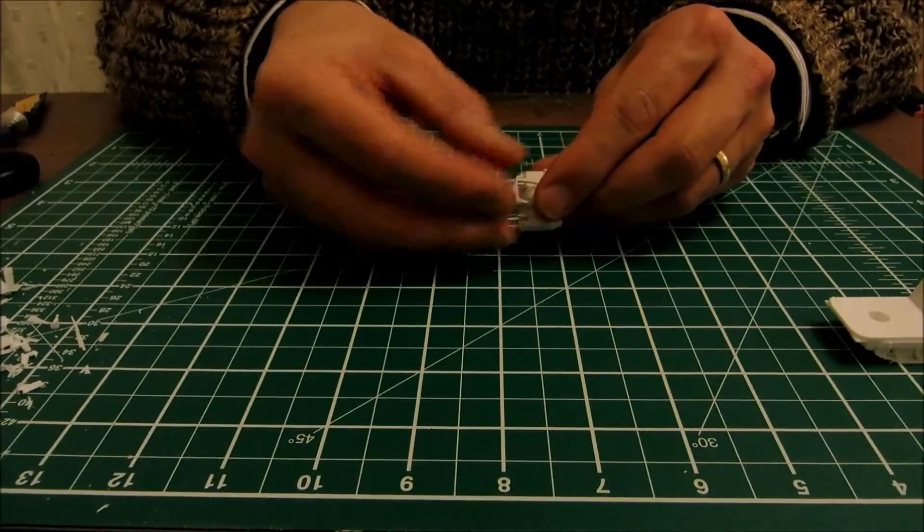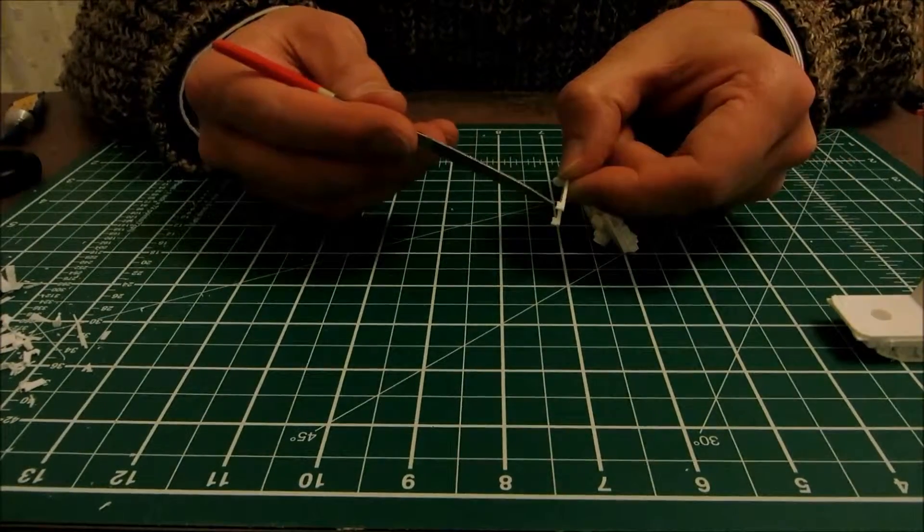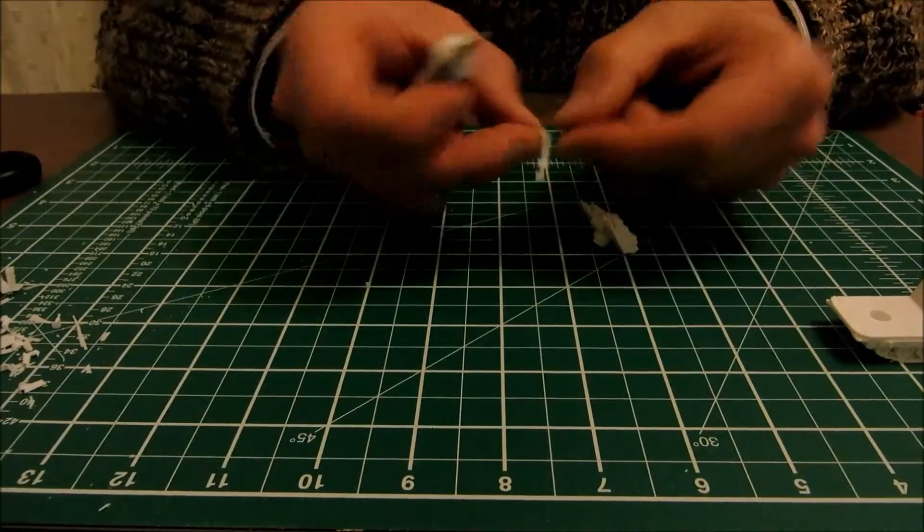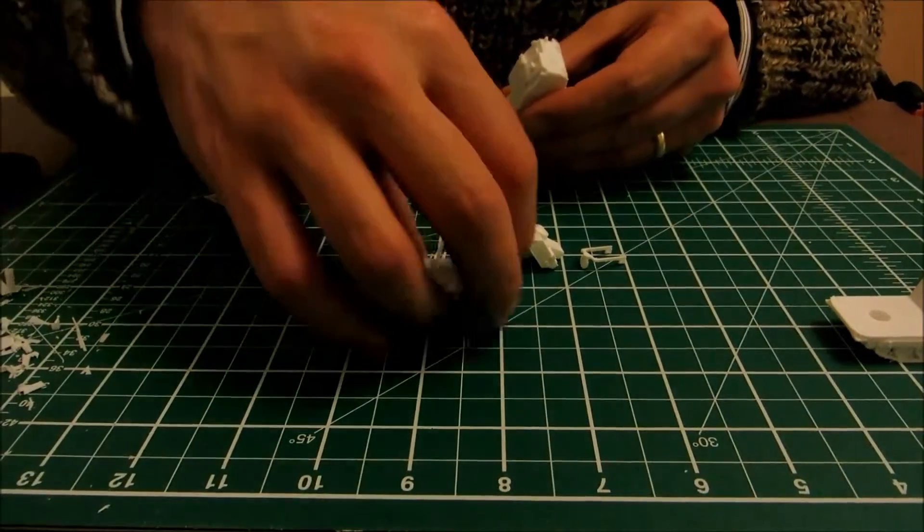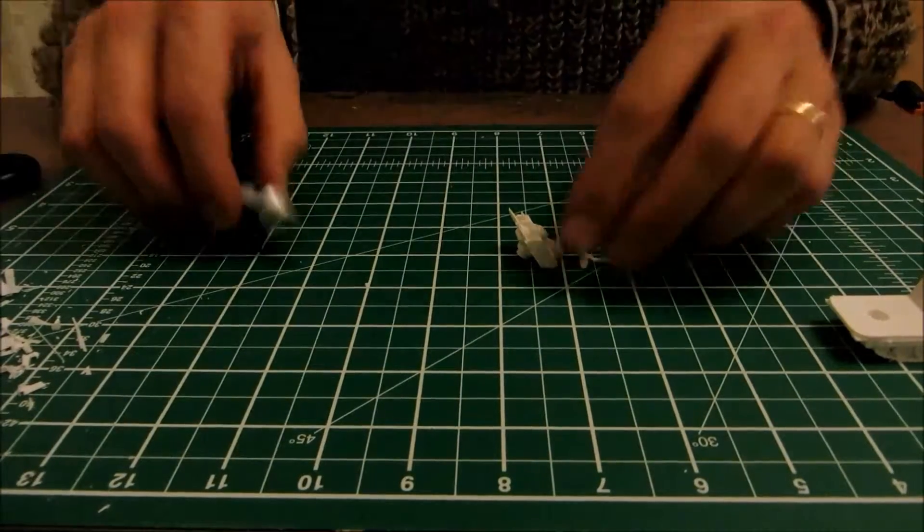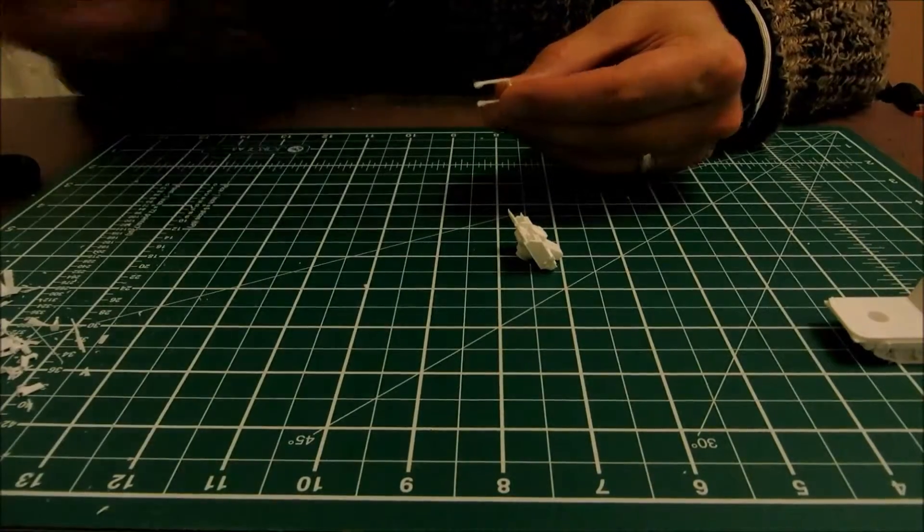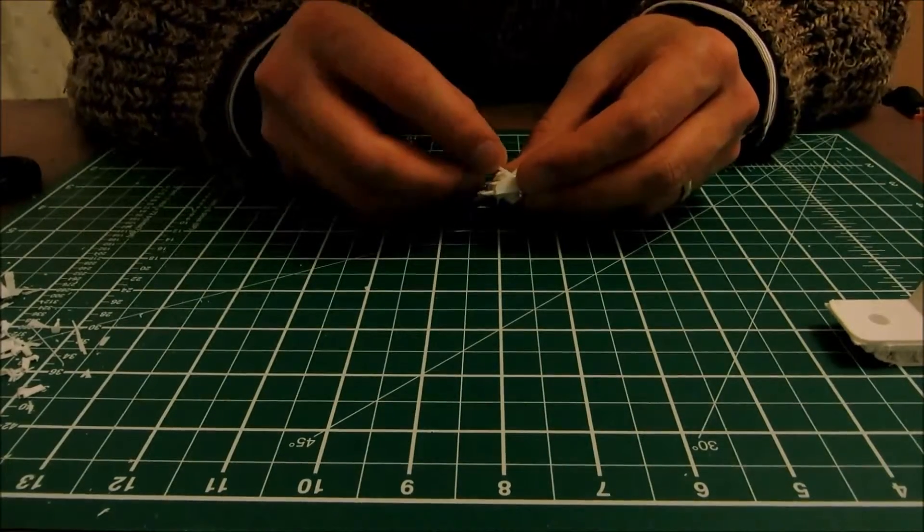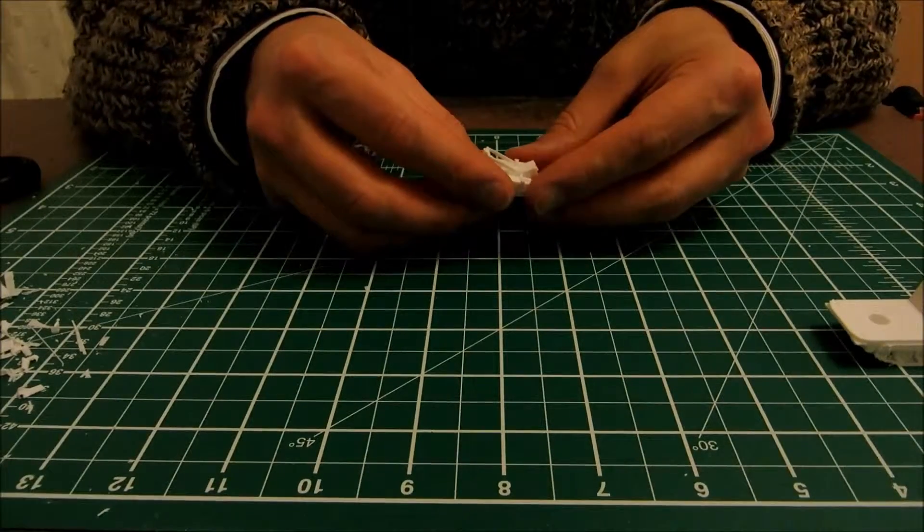Again, make sure you get this the right way up, which is with the antenna pointing down. I'll just get the pre-done one. So we're aiming for something like that. And obviously you can glue both sides of this. And again, there's no point watching this dry, so we'll stop the video.